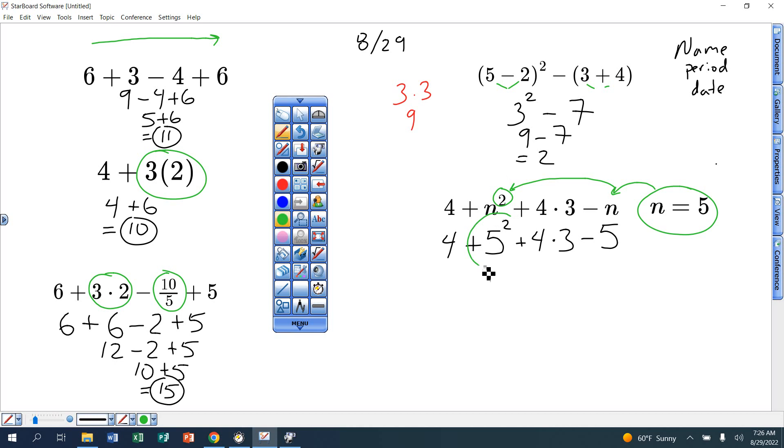So for this problem, do the exponent work first. 5 squared is 5 times 5, which gives you 25. So I write everything else with just that one part done. 4 stays there, this becomes 25, never 10. This is going to stay 4 times 3, minus 5. Now, for this problem, do this timesing first. So that 4 stays the same, plus 25, plus 12, minus 5. Now it's a left to right. 4 plus 25 is 29. Bring that 12 down and that minus 5 down. 29 plus 12, without my calculator, gives me 2, 3, 41. And then that 41 minus 5, good old-fashioned, gives me 36.